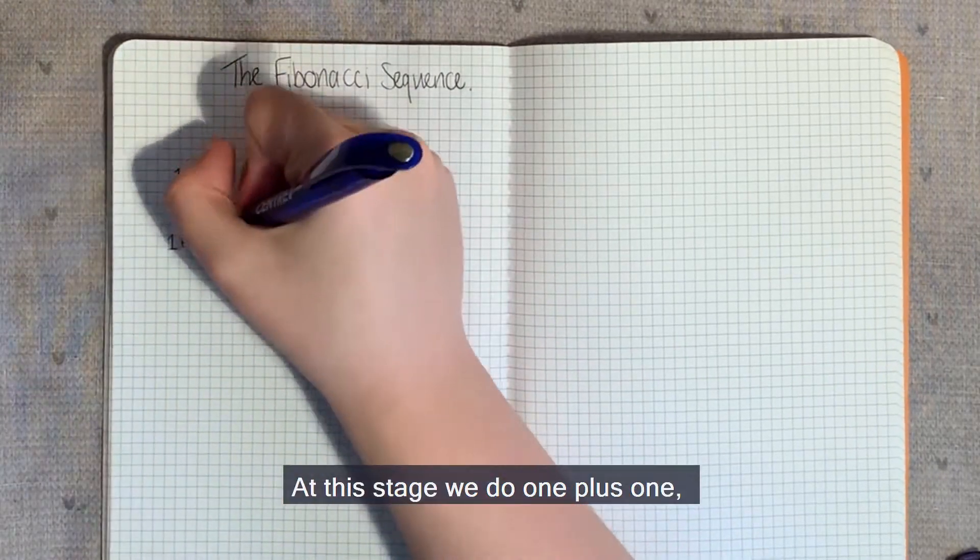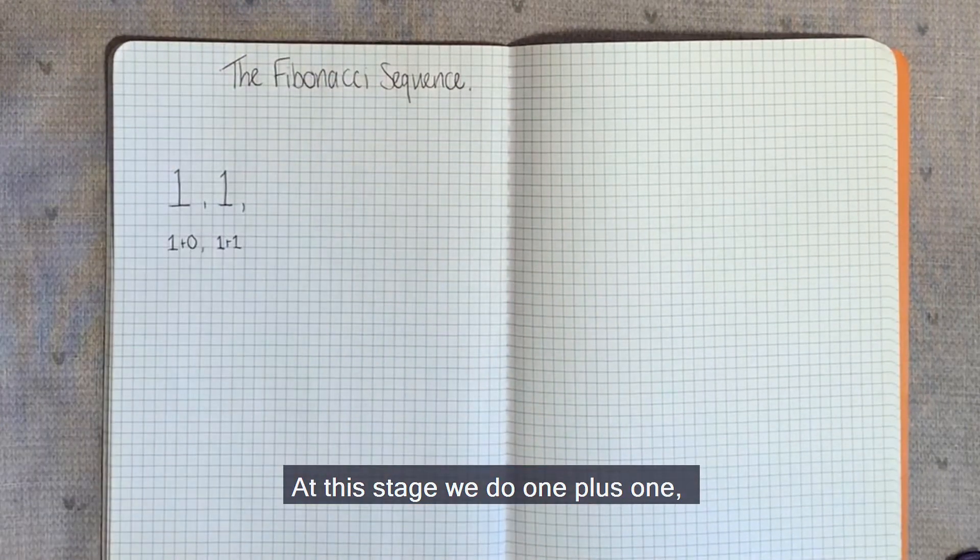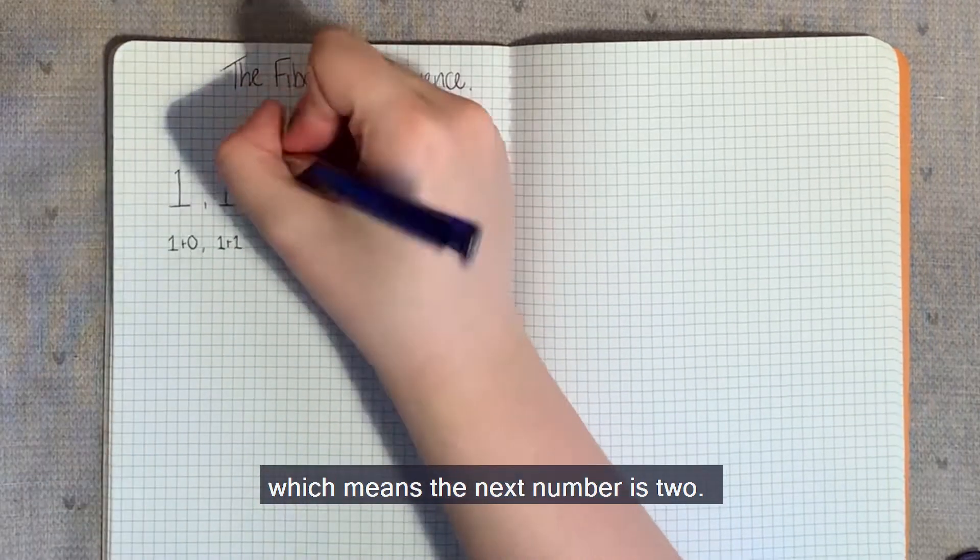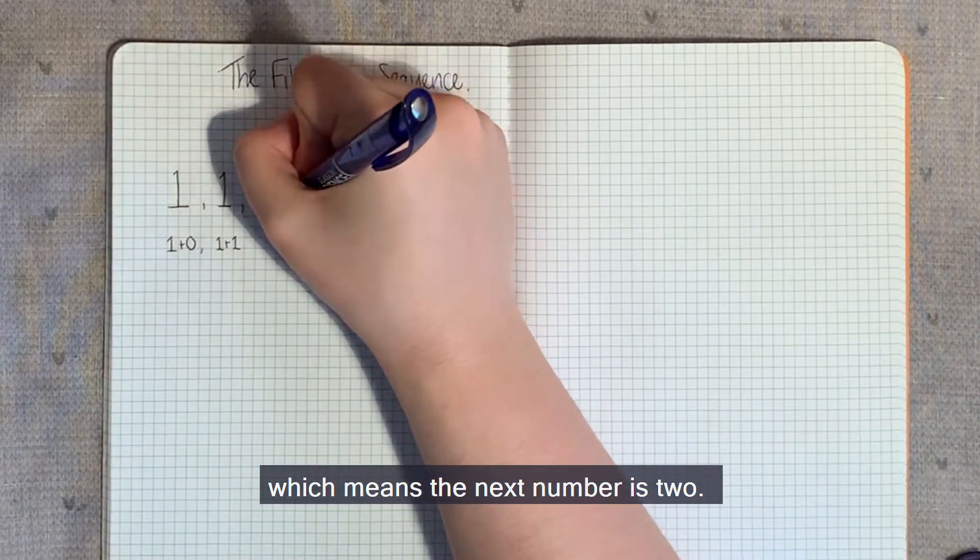At this stage, we do one plus one, which means the next number is two.